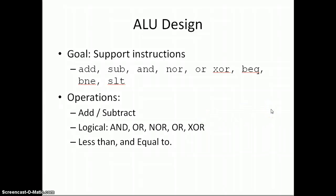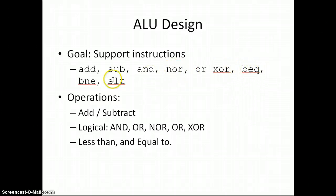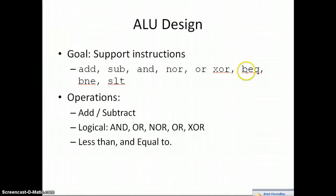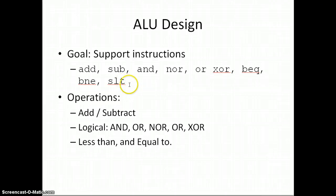Next I want to talk about the ALU design. The whole goal of the ALU is to support instructions. We've designed our instruction set architecture and we want to support instructions by doing basic things like add, sub, AND, NOR, OR, XOR, and then the really important ones: BEQ, BNE, and SLT. These are the challenging ones. We know how to build add/subtractors, and AND gates and NOR gates are really simple, but supporting branch equal, branch not equal, and set less than is challenging because we don't really want to implement a comparator. We want to build something that already uses stuff we have, like add and sub.